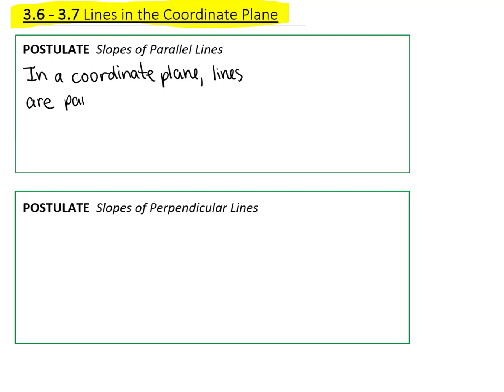So this first postulate is talking about slopes of parallel lines. In a coordinate plane, lines are parallel if and only if they have the same slope. And so think about that. That should make sense to you because they will never intersect and they'll always be running in the same direction. So they should have the same slope.